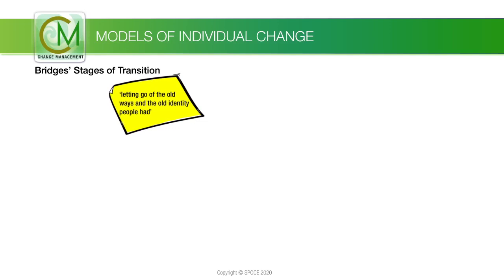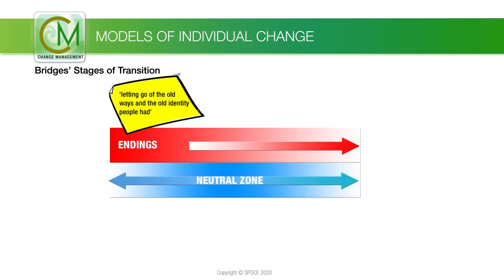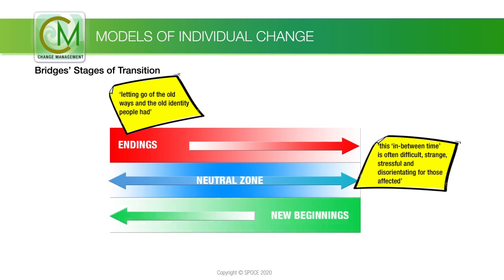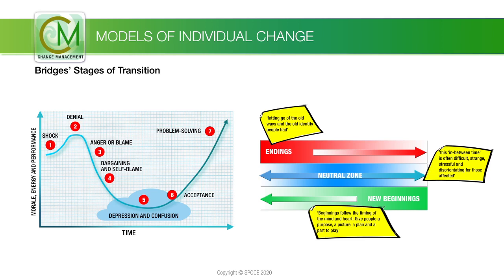Transition is the human psychological process of letting go of one pattern and engaging with a new one — letting go of the old ways and the old identity people had. This first phase of transition is an ending, the time when you need to help people deal with their losses. Going through an in-between time when the old is gone but the new isn't fully operational — we call this the neutral zone — is when the critical psychological realignments and repatternings take place. The third stage is coming out of transition and making a new beginning, when people develop the new identity, experience the new energy, and discover the new sense of purpose that makes the change begin to work.